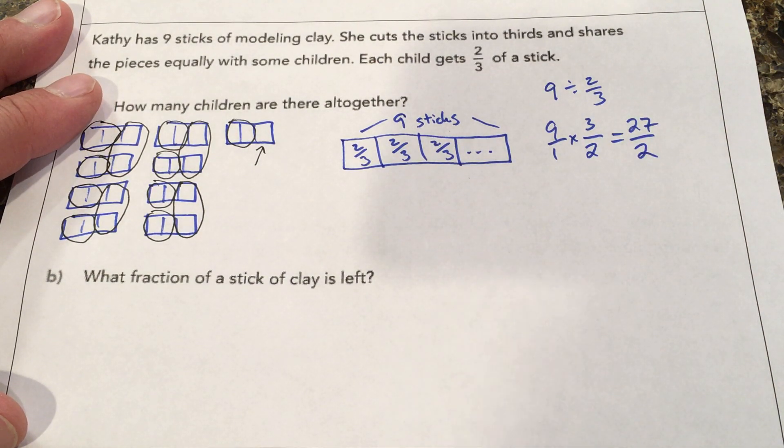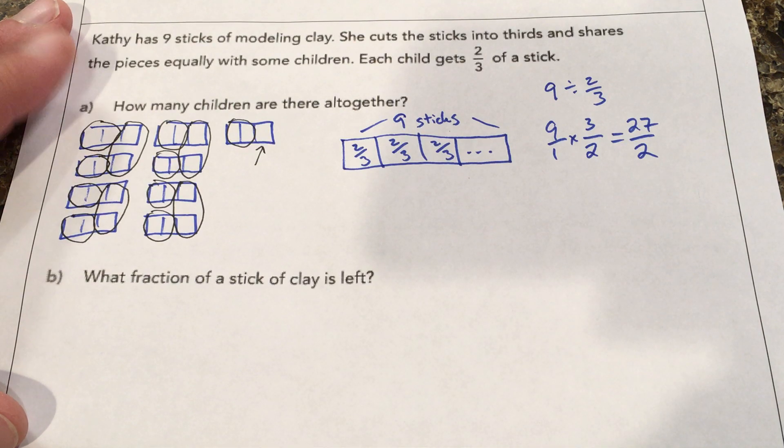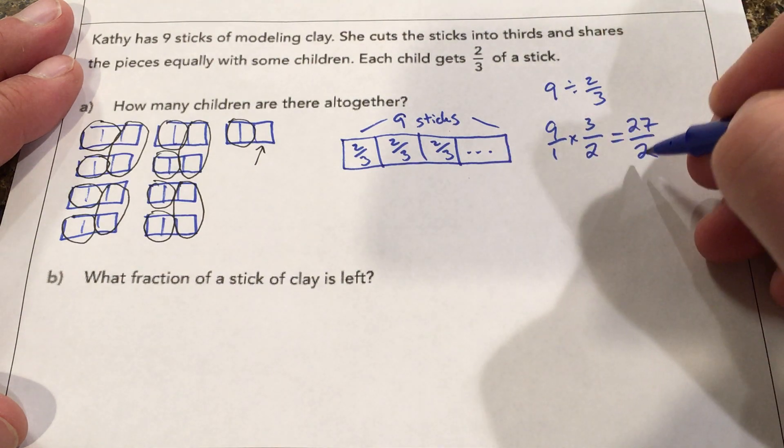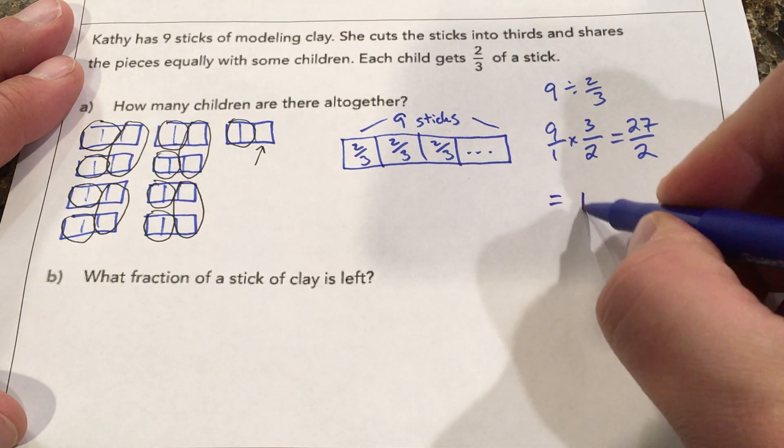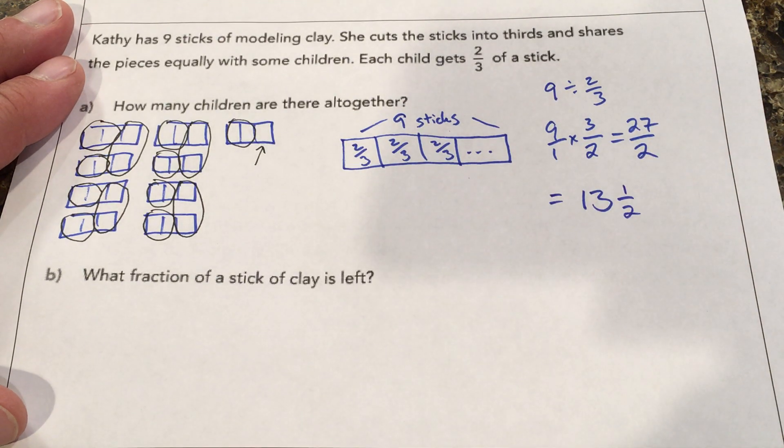Now normally fractions greater than one are great except in a word problem we want a mixed number that would make more sense. So we're going to divide two into 27. That would fit 13 times with one remaining. So 13 and a half.